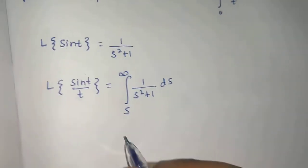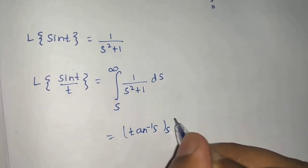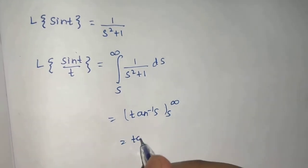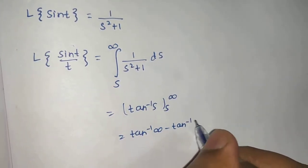Which in this case is 1/(s² + 1) with respect to s. So integration of 1/(s² + 1) is simply tan⁻¹(s) from s to infinity.